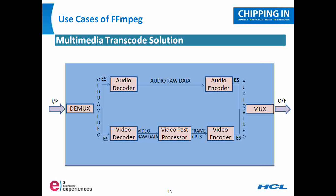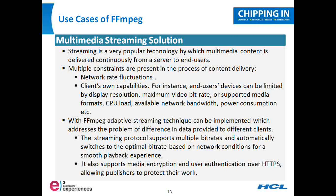Coming back to transcoding: the post-processed data is fed to a respective encoder, where the data is compressed into the desired format. The compressed data is then fed to a multiplexer. The job of the multiplexer is to combine audio and video elementary streams into the desired container format. Later in the slides, a live example will be shown of how FFmpeg does transcoding and what kind of command-line options can typically be given. This is basically the transcoding pipeline for how multimedia file format can be changed using FFmpeg.